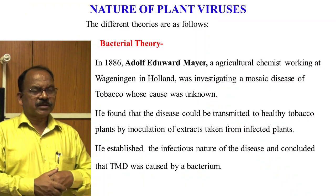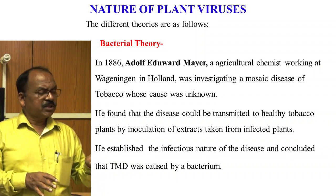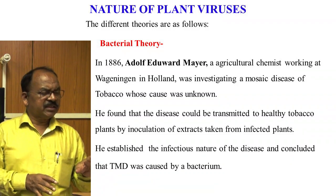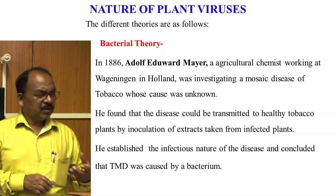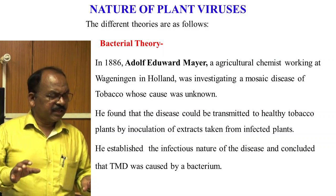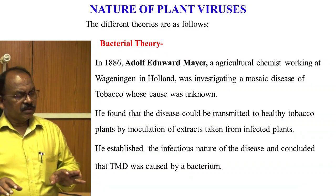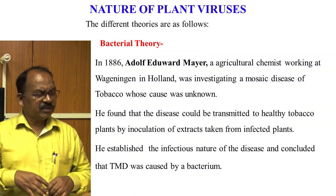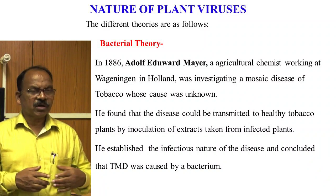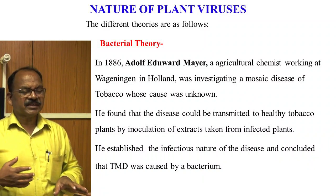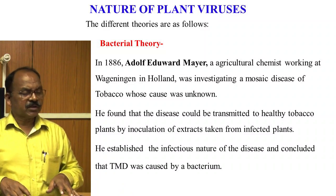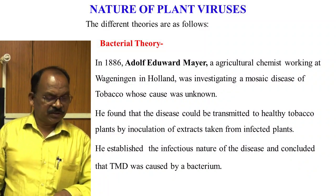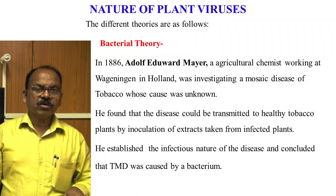Different theories have been proposed from time to time to understand the nature of plant viruses. The first is the Bacterial Theory. In 1896, Adolf Mayer, a research chemist working at Wageningen in Holland, was investigating a mosaic disease of tobacco whose cause was unknown. He found that the disease could be transmitted to healthy tobacco plants by inoculation of extracts from infected plants, and concluded that tobacco mosaic disease was caused by a bacterium.